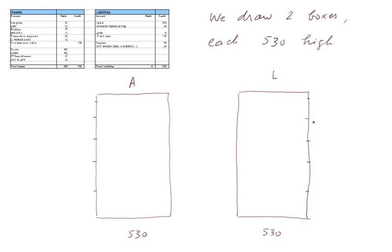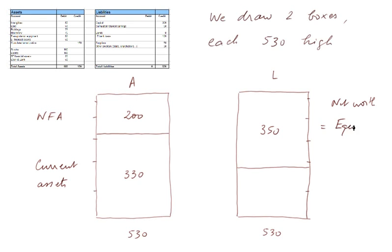On the asset side, the net fixed assets are 200. So, they go up to here, 200, net fixed assets. And the rest, 330, is the current assets. And on the liability side, the net worth is 350. So, that's up to there, 350, net worth, also called the equity. And then we have two debt items. The costly debt of 100, let's call them just the debts. And the free debt of 80.